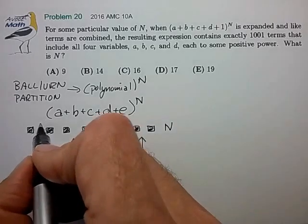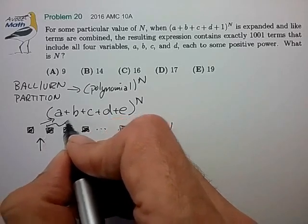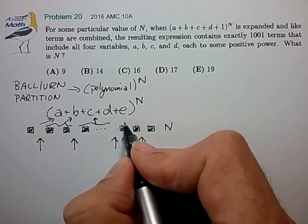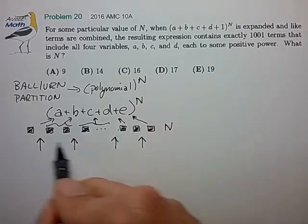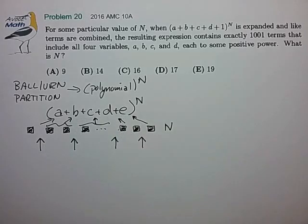The first pile will go to a, the power of a. The second pile will go to the power of b. The third pile will go to the power of c. And so on to construct the various terms that are found in the expansion of this polynomial.